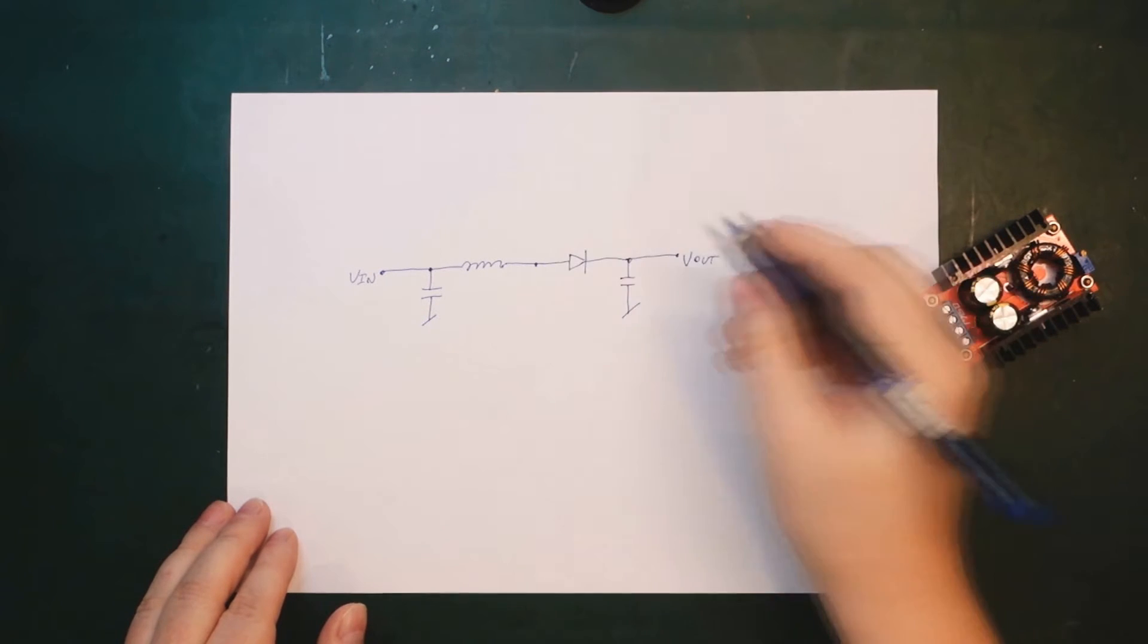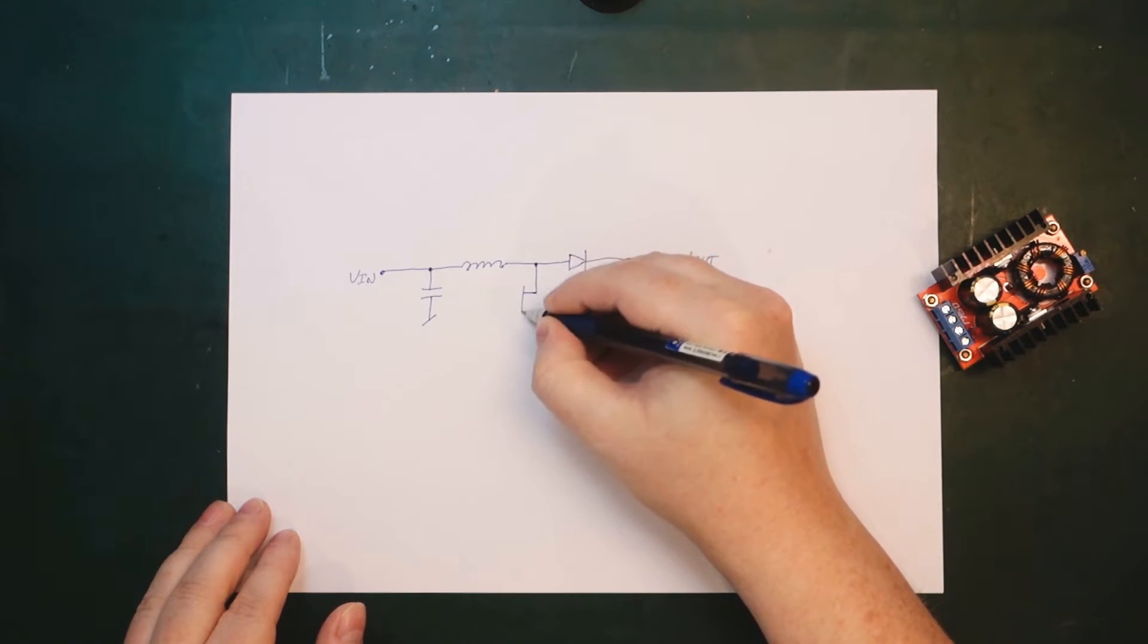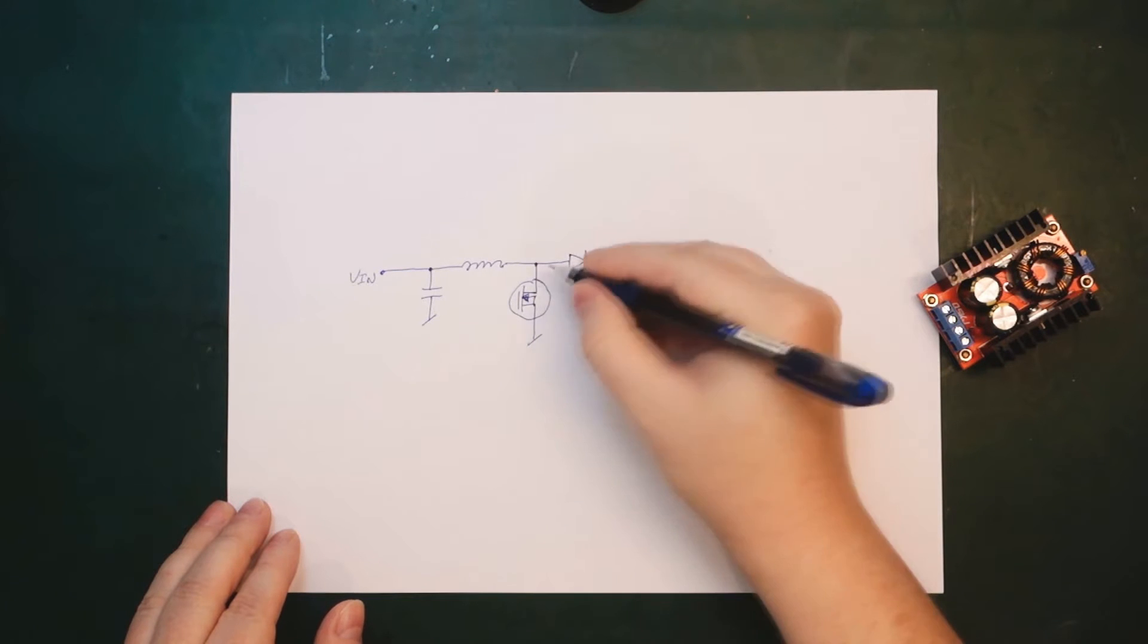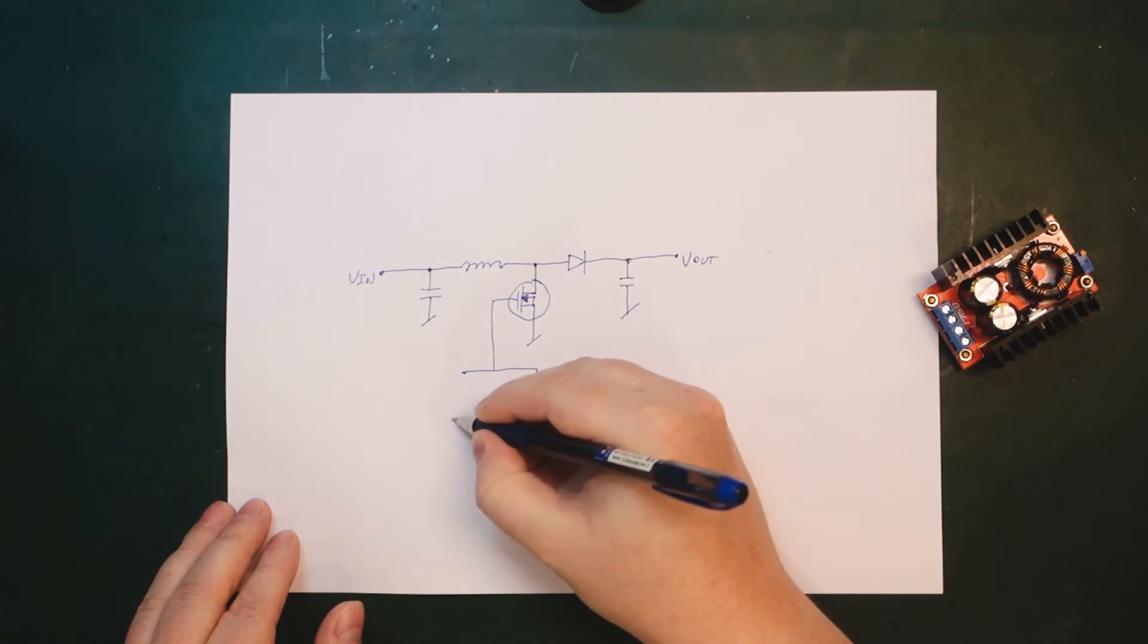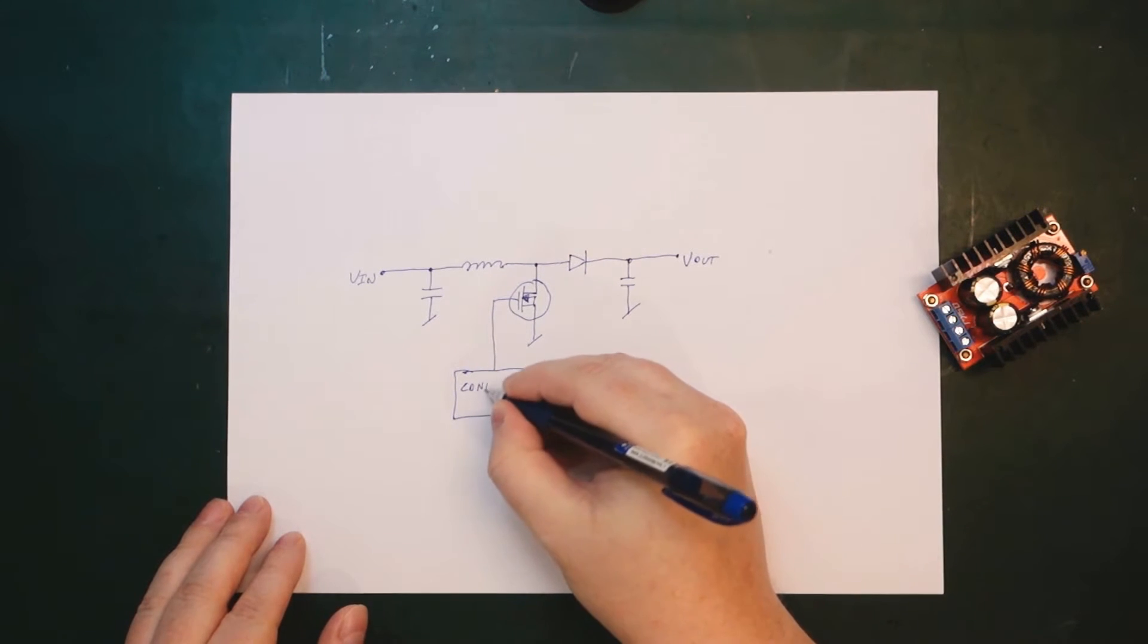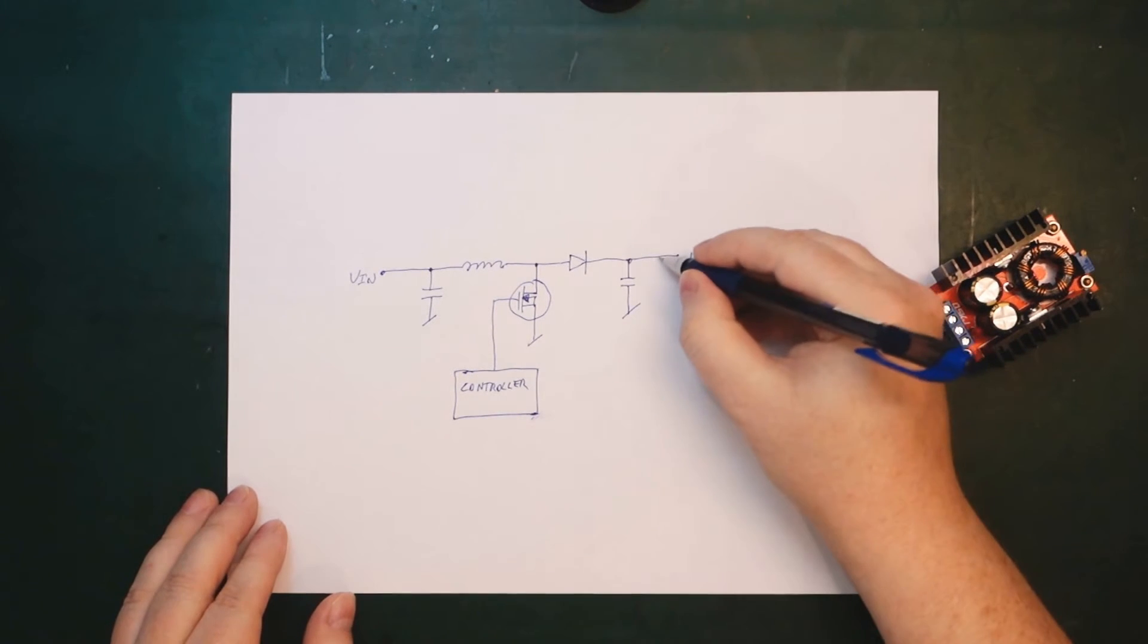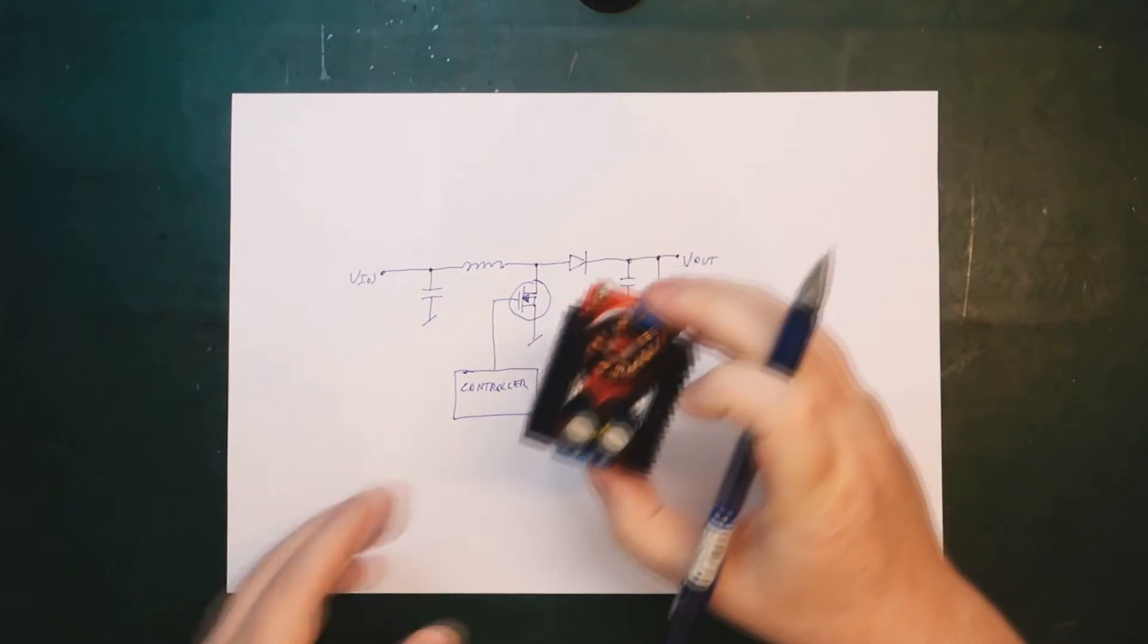And we will have our switching element here. This is typically a MOSFET. And then we will have some kind of controller here. And the controller will get some kind of feedback. The output voltage here. This one is adjustable.